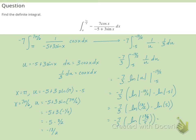So we can write this as negative 7 thirds natural log of 13 tenths.